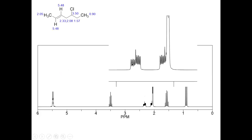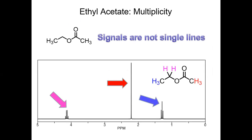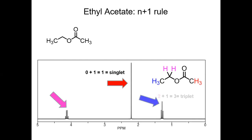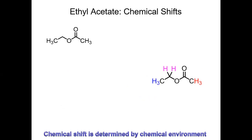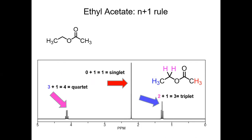When signals aren't symmetrical in their height ratios, that indicates something else is happening — what we call complex splitting or a doublet of doublets, not a simple multiplet. For example, a signal with six equal-height lines is not a sextet. In a true sextet, the outer lines would be shortest and the inner lines progressively taller, following Pascal's triangle. Complex splitting means multiple non-equivalent neighbors are at work, which we'll cover later.